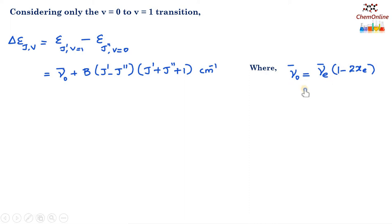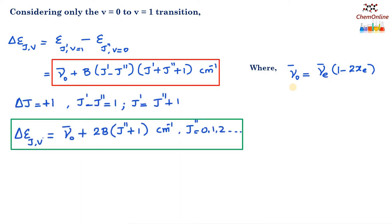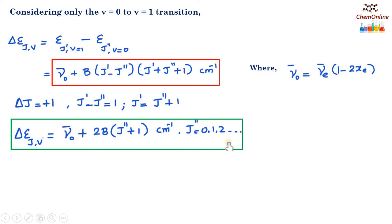The frequency ν̃_0 is called the band center or band origin. If delta j equals plus 1, we have j' minus j'' equals 1, meaning j' equals j'' plus 1. Then we can write the equation as delta epsilon equals ν̃_0 plus 2B(j'' + 1) centimeter inverse, where j'' equals 0, 1, 2, 3, etc.